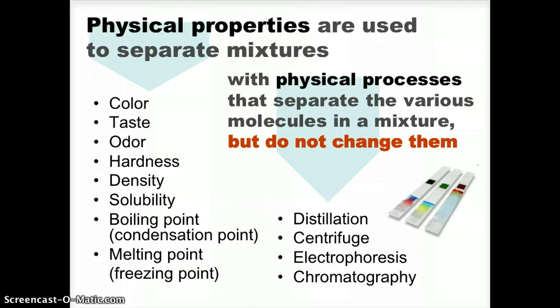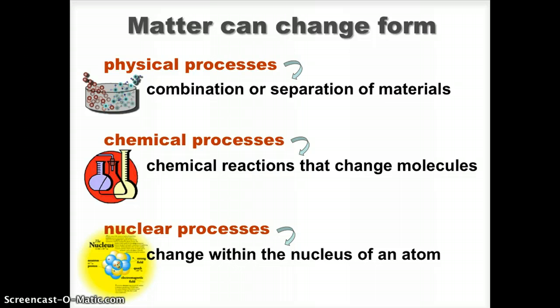A lot of chemistry is based on the physical properties of chemicals. For example, salt water is a physical mixture of salt and water. As salt water freezes, which is a physical process, the salt is expelled from the ice. We can explain why this happens at the molecular level. Physical processes involve changes in the association of molecules with each other, such as cutting paper or pushing the air out of a sponge with water.